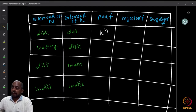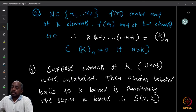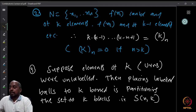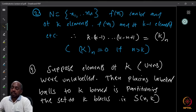So the first entry is k^n. Now the next entry in the same row is injective f. If N = {x₁, x₂, ..., xₙ}, then f(x₁) can be any of the k elements. But once you fix the image for x₁, x₂ cannot map to that image because we want injectivity. So f(x₂) must be any of the remaining k−1 elements.